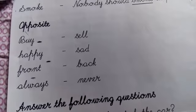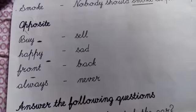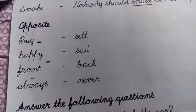Sorry, next spelling is always. Always opposite is never. Always means hamesha, never means kabhi nahi. Always opposite is never.